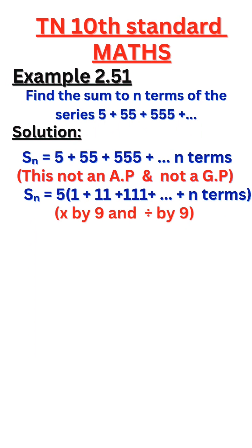So we multiply by 9 and divide by 9. 5 into 9 divided by 9 into 1 plus 11 plus 111 plus dot dot dot plus n terms.